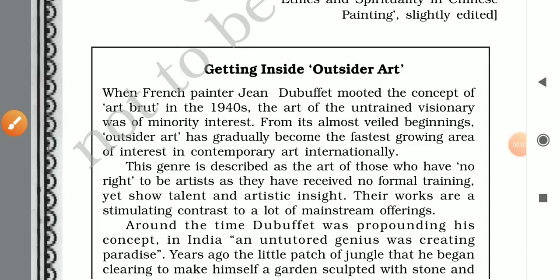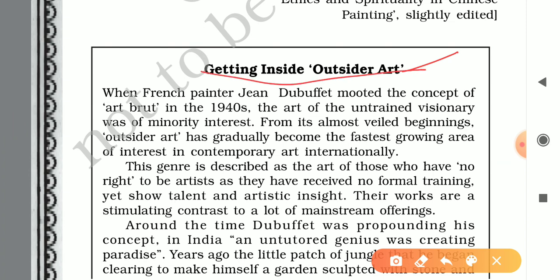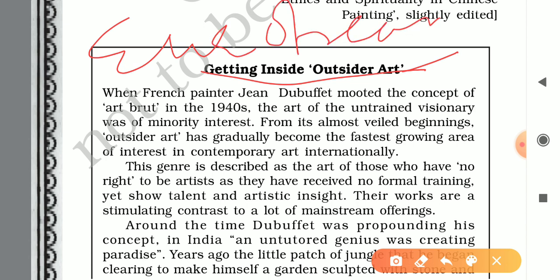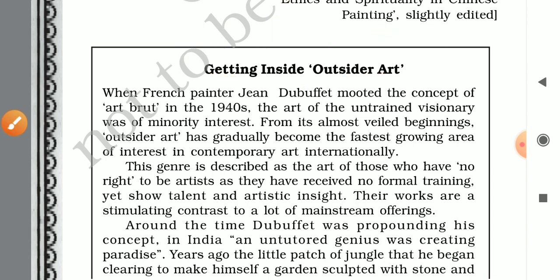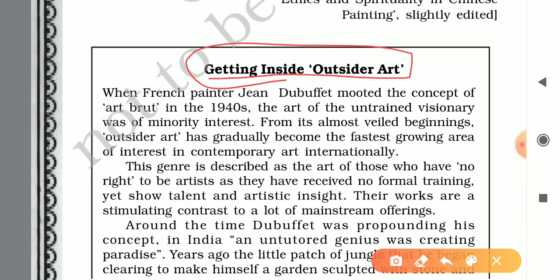Hello students, today we will discuss the next part of 'The Landscape of the Soul.' We have already discussed the difference between European and Chinese art. Today we will discuss Indian art, and first of all, getting inside outsider art. Outsider art is the creativity or creation of those who are not formally trained.